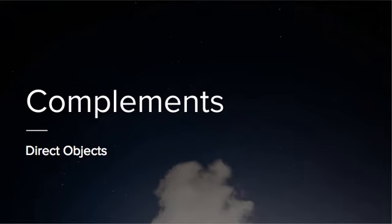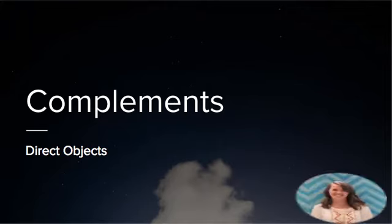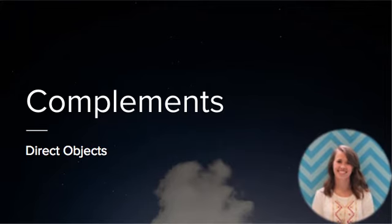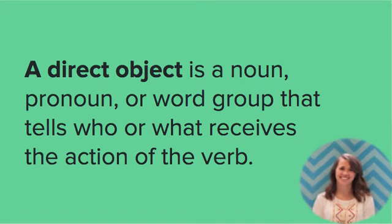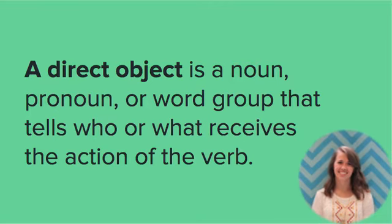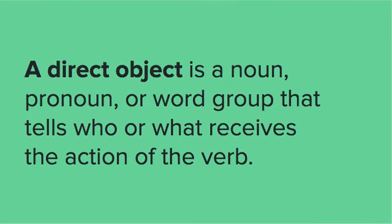I made this video in the library and Miss Bunch was there, so she's going to be the star of this video. A direct object is a noun, pronoun, or word group that tells who or what receives the action of the verb.